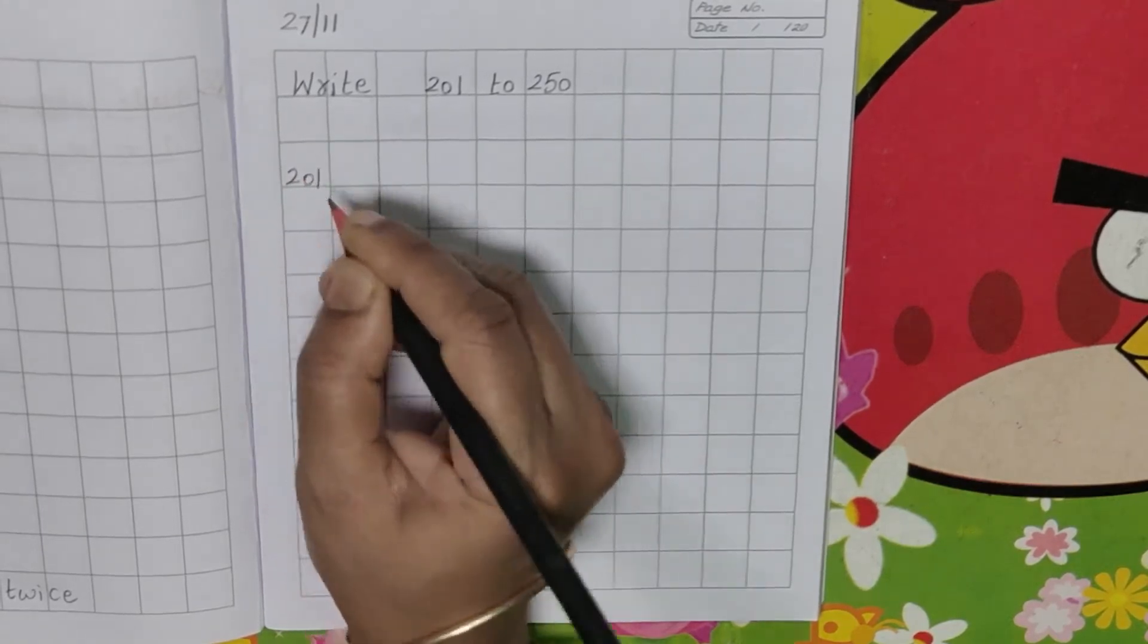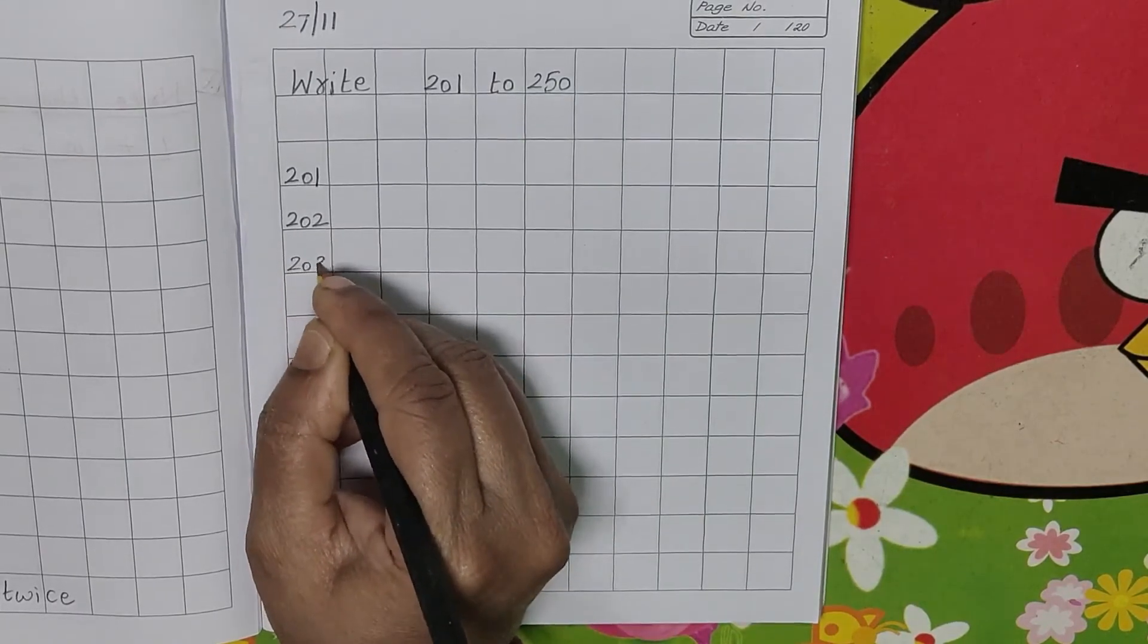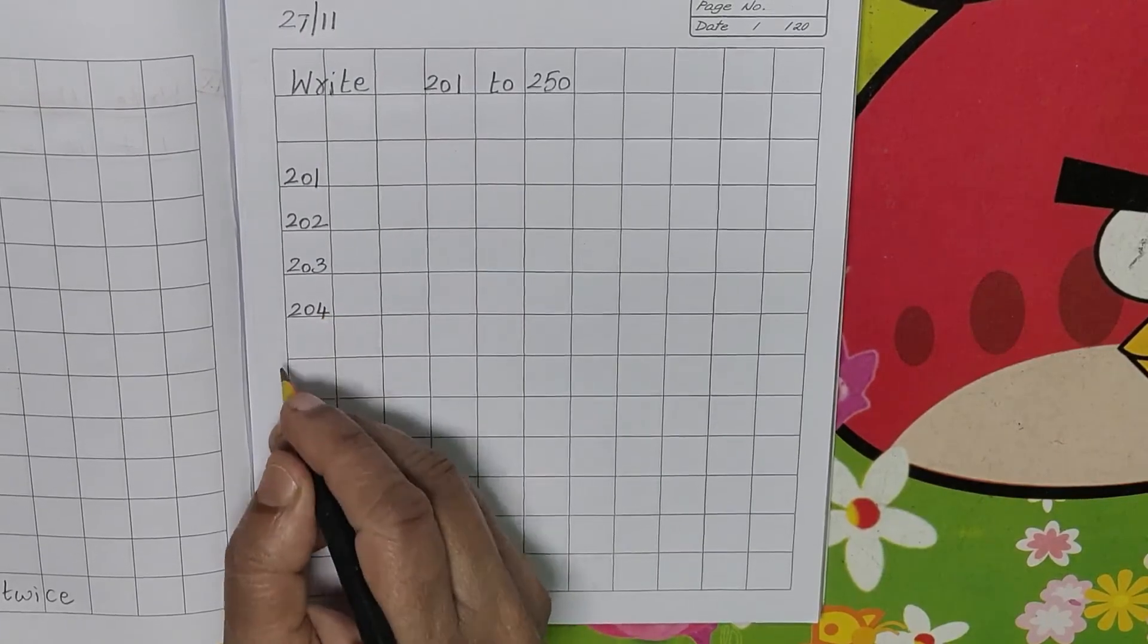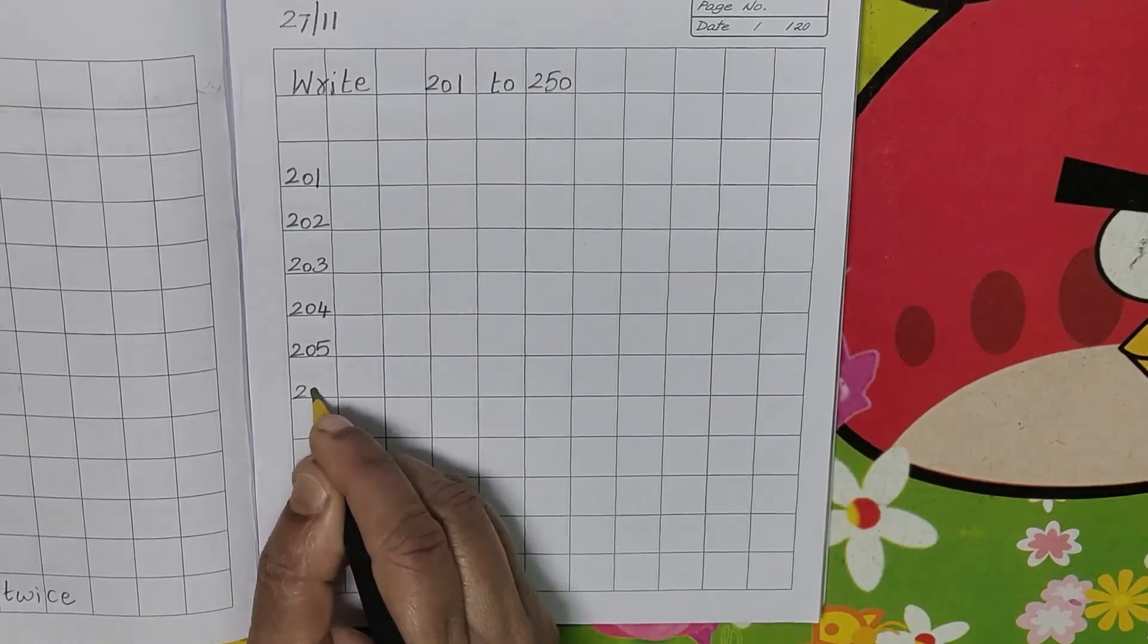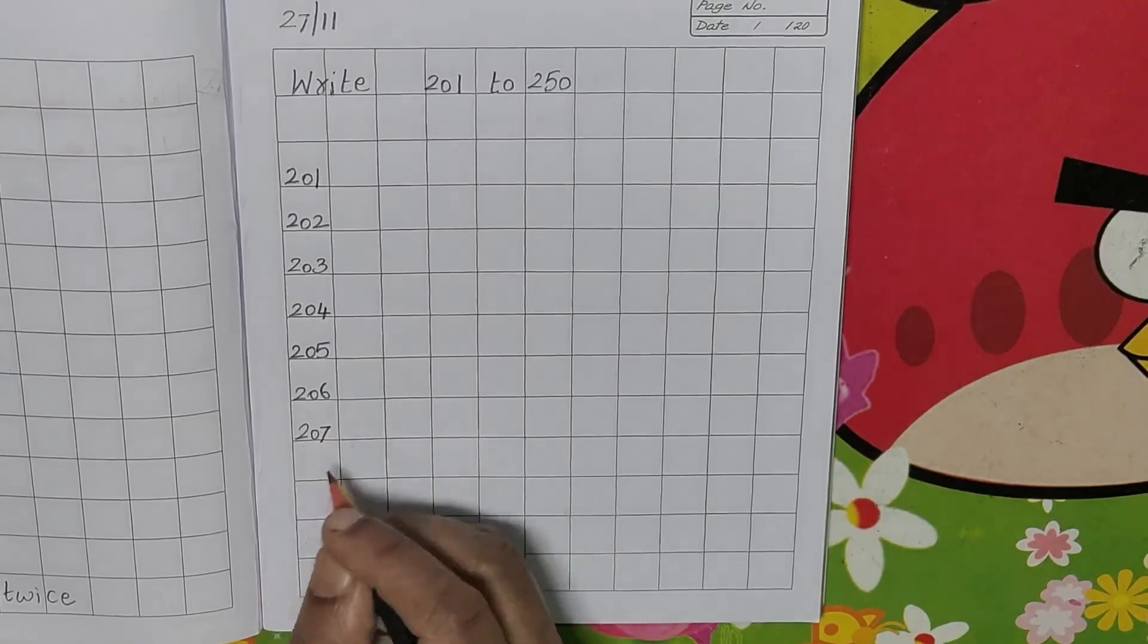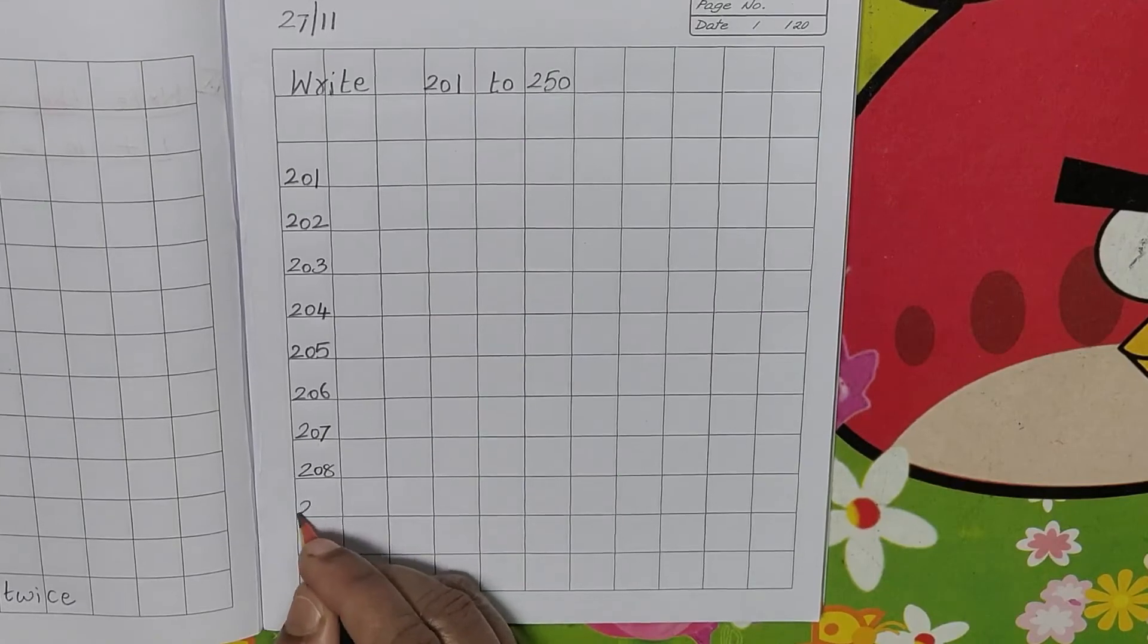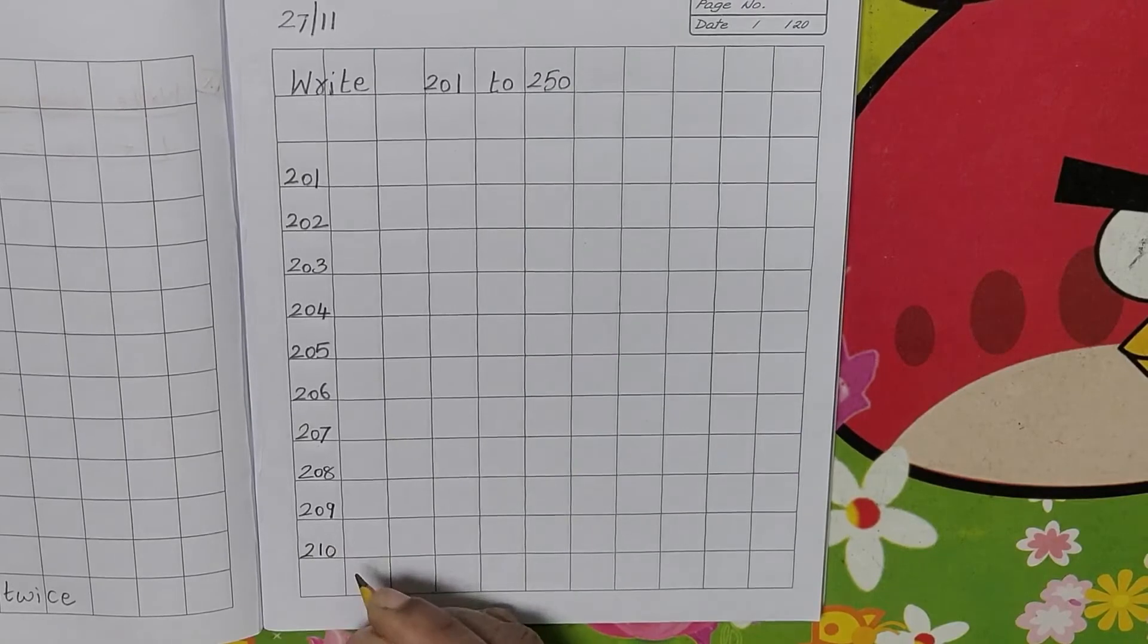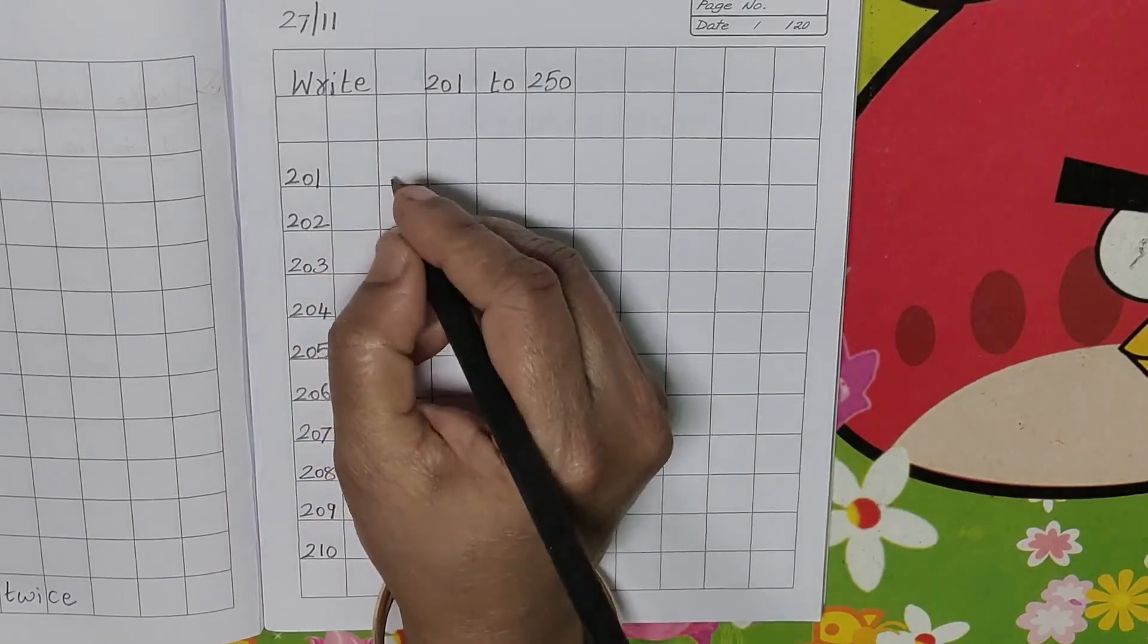201, 202, 203, 204, 205, 206, 207, 208, 209, 210. After writing, leave one line and start in the next column.